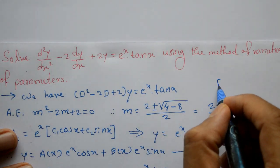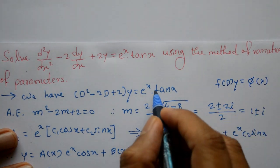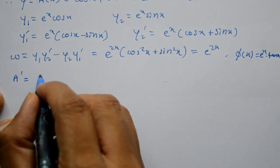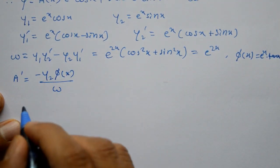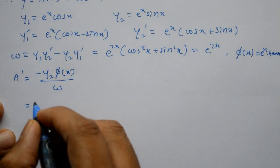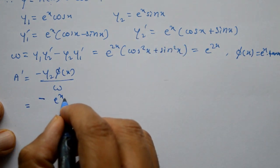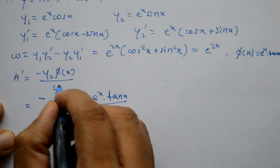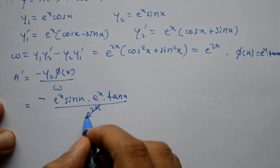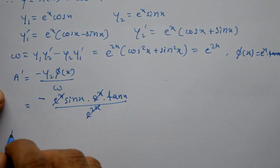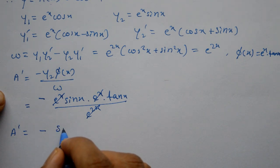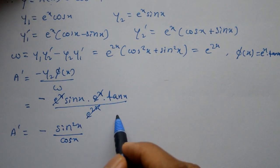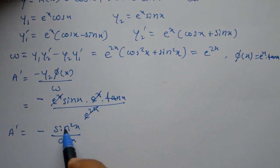Here phi(x) equals e^x·tan x. The formula gives a' equals minus y2·phi(x) divided by W. Substituting y2 equals e^x·sin x, phi(x) equals e^x·tan x, and W equals e^(2x): the e^(2x) terms cancel, giving a' equals minus sin x times tan x, which equals minus sin²x divided by cos x.